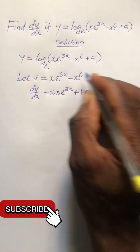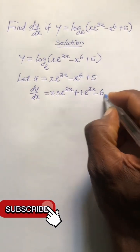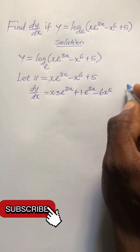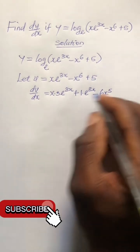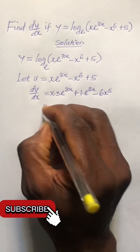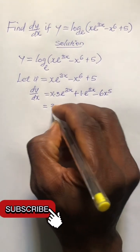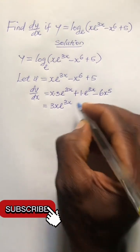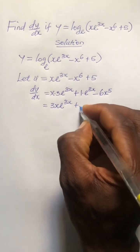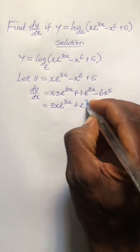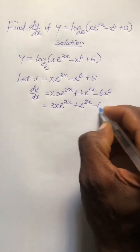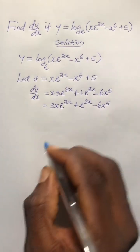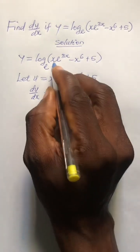Differentiating x^6 gives 6x^5, and the derivative of 5 is 0. So arranging them, we have du/dx equals 3x·e^(3x) plus e^(3x) minus 6x^5.